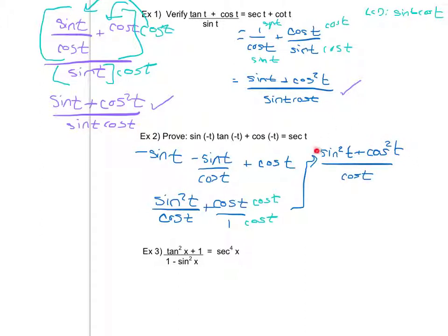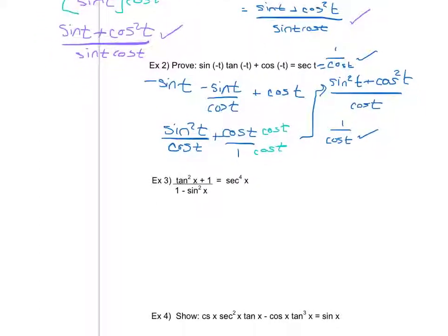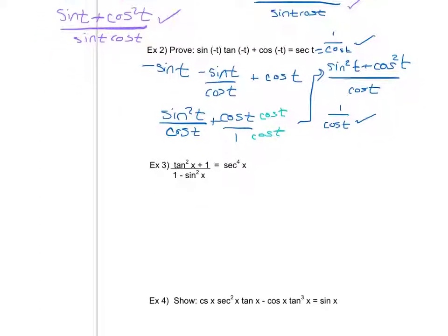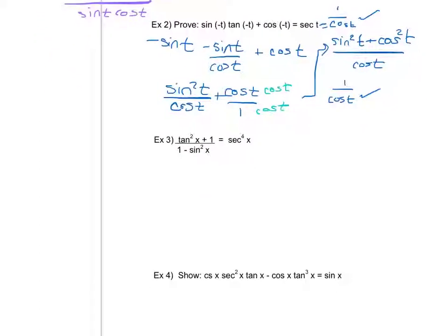I recognize sine squared t plus cosine squared t as a Pythagorean identity equal to one. So this simplifies to one over cosine of t. Since secant of t is defined as one over cosine of t by the reciprocal function definition, I've successfully shown that the left side and the right side are equivalent. On this second example, I only had to rewrite one side.